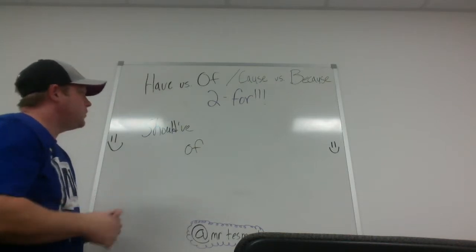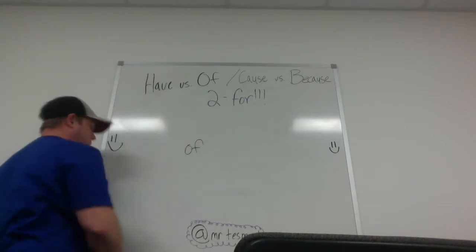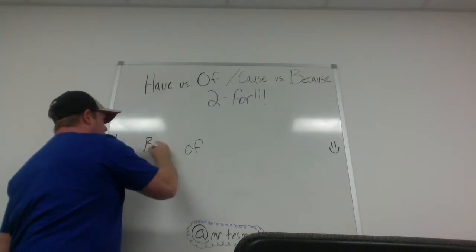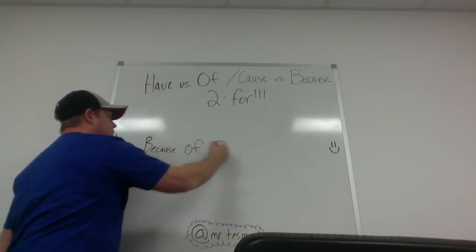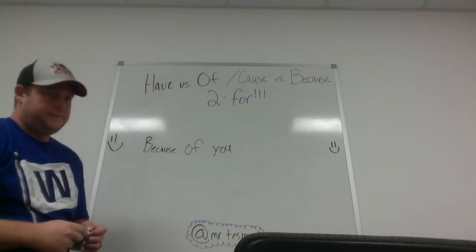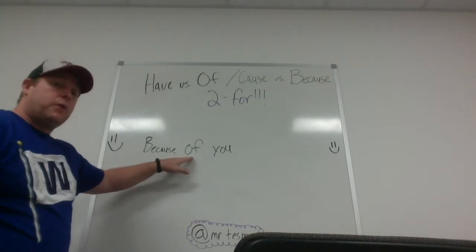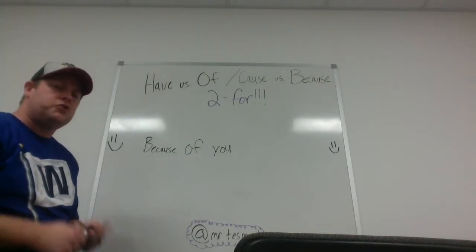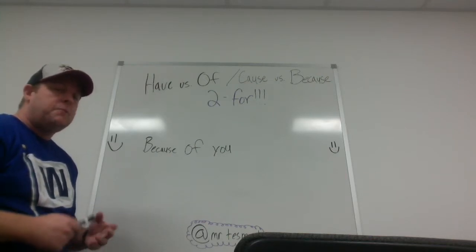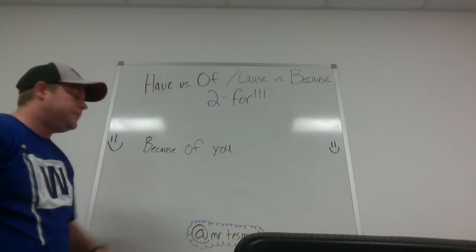So 'should have' is the correct way to say it. 'Of' is a whole different thing — like, 'because of you, I never stray too far from the sidewalk' — Kelly Clarkson. So this is the 'of' that you might be looking for in that case. So when you say could have, would have, should have — all of those — when you shorten them to should've, could've, would've, make sure you're not using the 'of' version. Make sure you're using the apostrophe VE version of that.